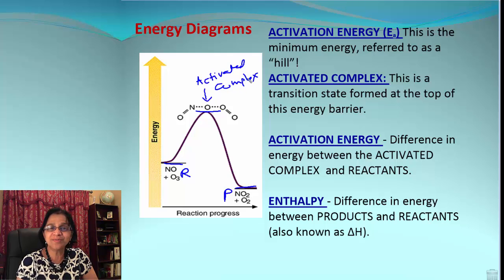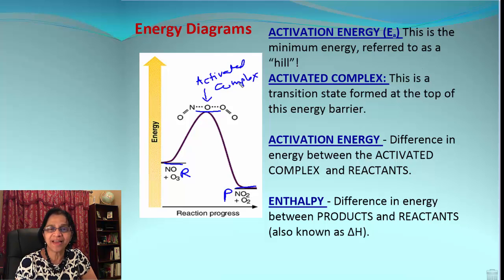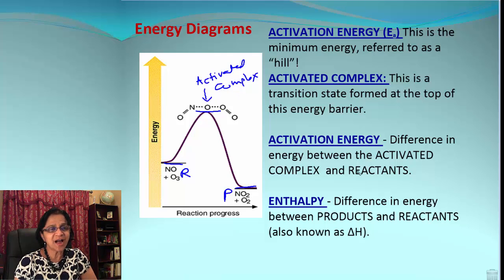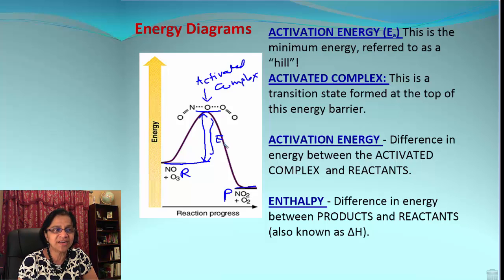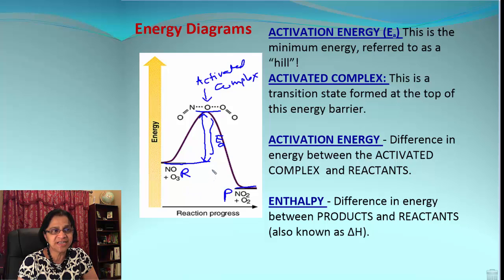There are new terms along with energy diagrams. Activation energy is the minimum energy required, referred to as the hill or mountain. The activated complex is the transition state formed at the top of the energy barrier. Activation energy, commonly referred to as EA, is the difference between the energy of the activated state and the energy of the reactants. Enthalpy is the difference between the energy of the products and reactants, referred to as delta H.